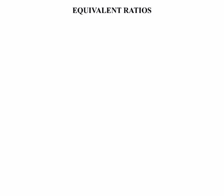Now in this lesson we're looking at equivalent ratios. By way of illustration, we'll look at 3 quarters as a fraction firstly. If we times the top by 2 and the bottom by 2, an equivalent fraction is formed. 3 times 2 is 6, 4 times 2 is 8. So we had 3 quarters and we can change it to 6 eighths — they are an example of equivalent fractions.